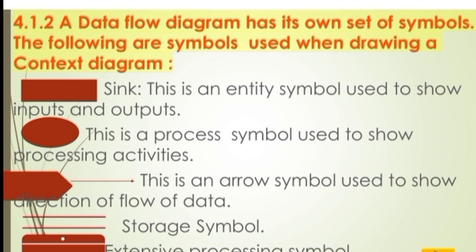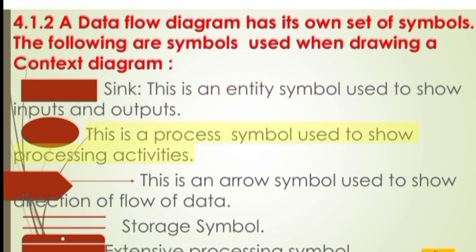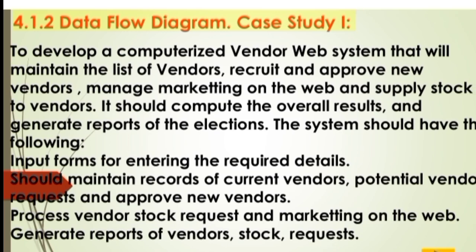A data flow diagram has its own set of symbols. The following are symbols used when drawing a context diagram: the sink/source is an entity symbol used to show inputs and outputs; a process symbol is used to show processing activities; an arrow symbol is used to show the direction of flow of data; a storage symbol; and an extensive processing symbol.